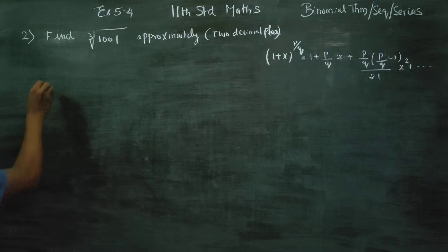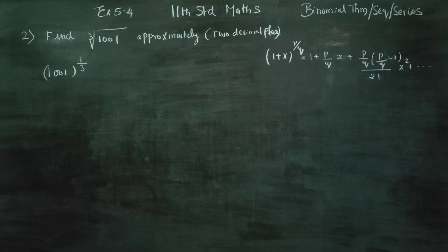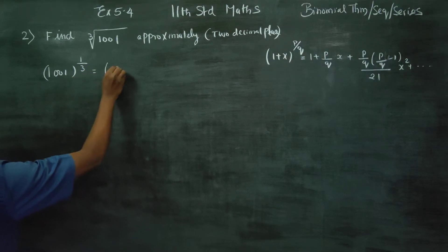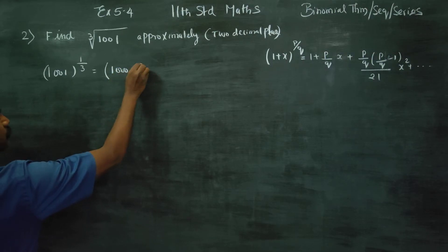Stage 1: 1001 whole power 1 by 3. This can be written as 1000 plus 1 whole power 1 by 3.